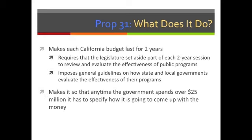Prop 31 makes it so that anytime the government spends over 25 million dollars, it has to specify how it's going to come up with that money — either by raising revenues, cutting spending elsewhere, or both. Likewise, anytime the government wants to cut over 25 million dollars in taxes or fees, it has to specify how it's going to replace that money, again either by raising taxes or fees elsewhere or by cutting spending elsewhere.